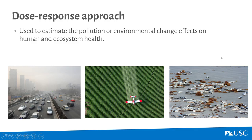A dose-response approach is more typically used when we're trying to understand the relationship between a change in environmental conditions and their effect on human or ecosystem health. For example, increases in traffic, pollution, smog, chemicals in the environment, or eutrophication of waterways — how a change in those conditions would lead to greater morbidity and mortality for humans, animals, and plants. After understanding that relationship, we look at likely scenarios for the change in environment and impacts on human and ecosystem health, then assign values based on losses, morbidity, and mortality.